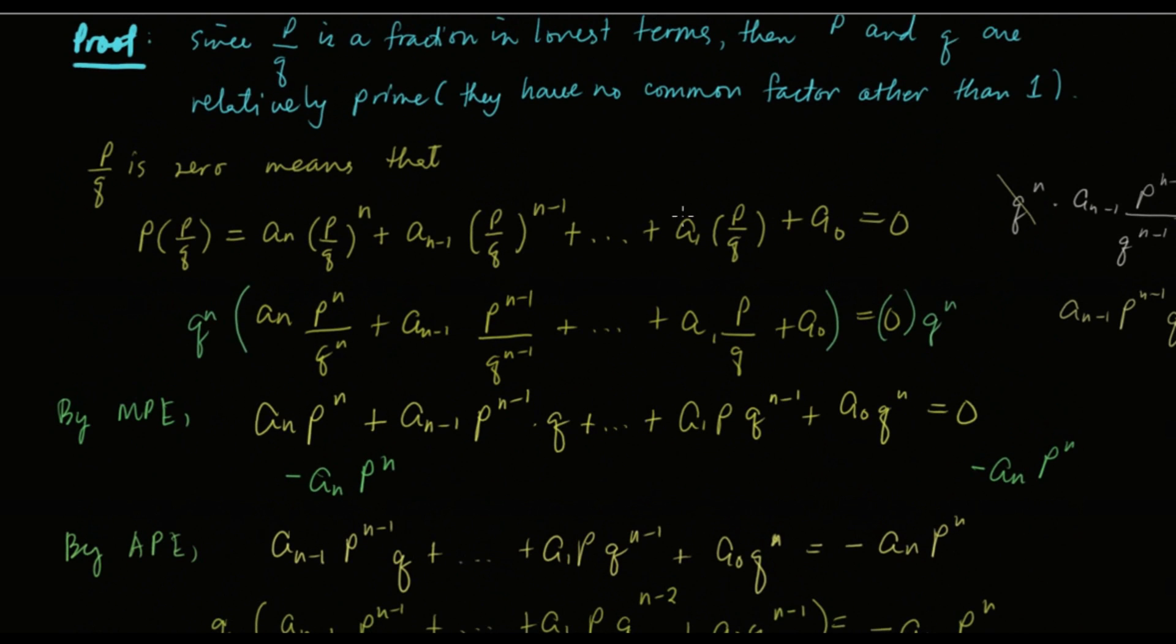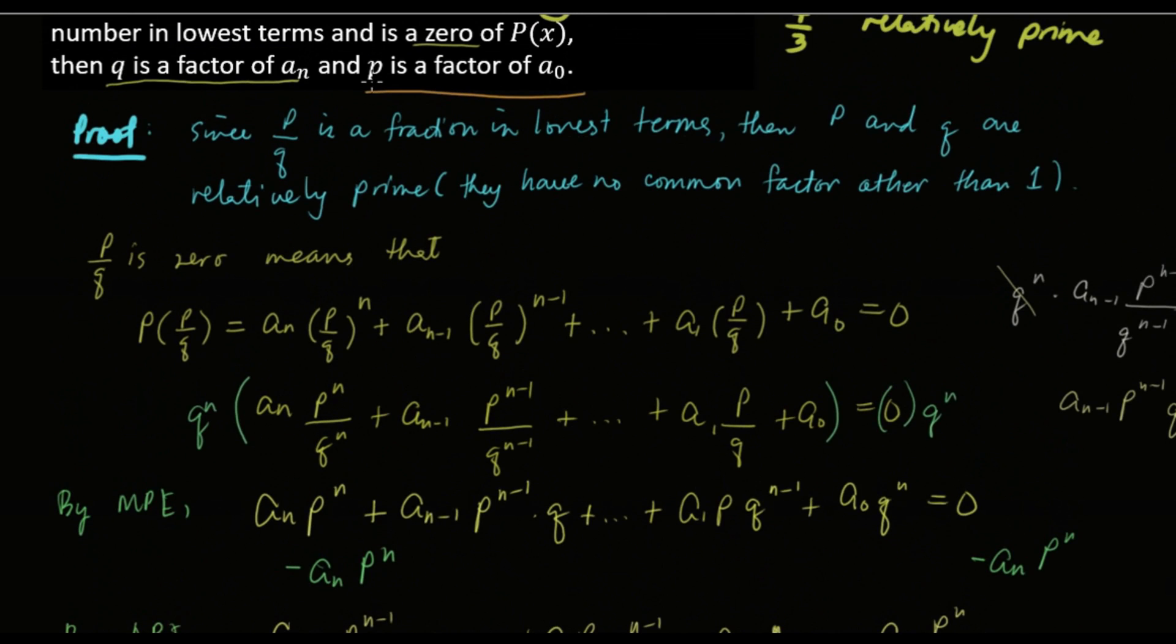Let me have a review. p and q are relatively prime. They have no common factor other than 1. p over q is a zero. So when we substitute it into the polynomial function, the result should be zero. And we multiply everything by q raised to n.